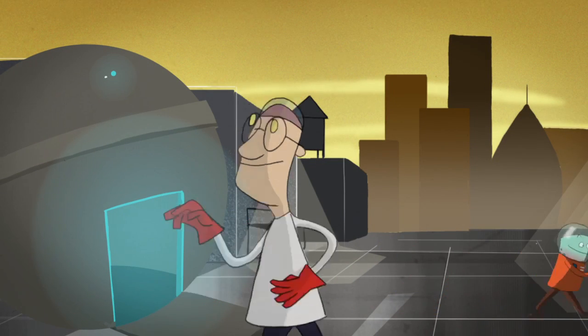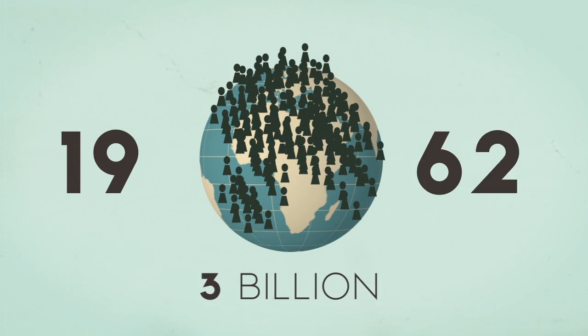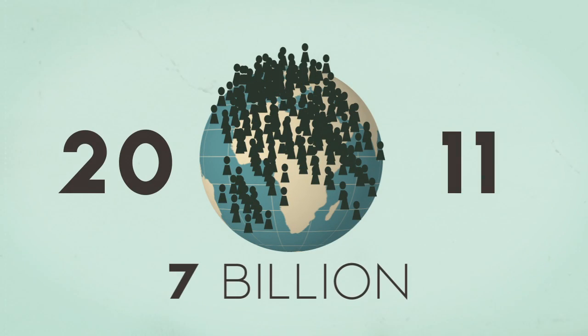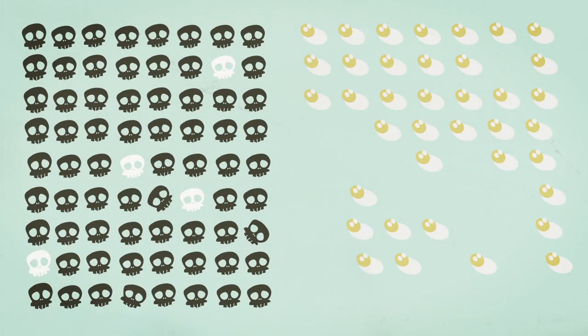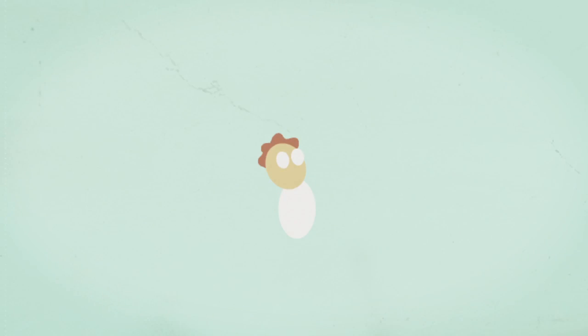In 1804, the world's population reached 1 billion people. About 200 years later, it reached 7 billion. Every year, there are many more babies being born than people dying. Furthermore, people are living much longer, especially in the developed world.